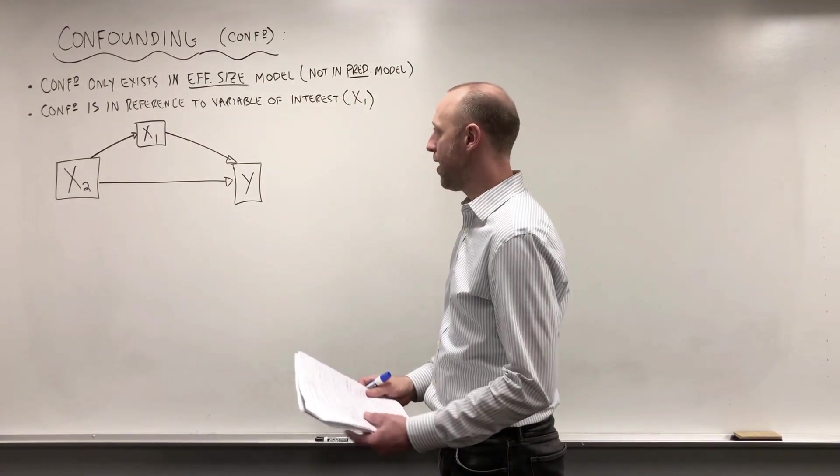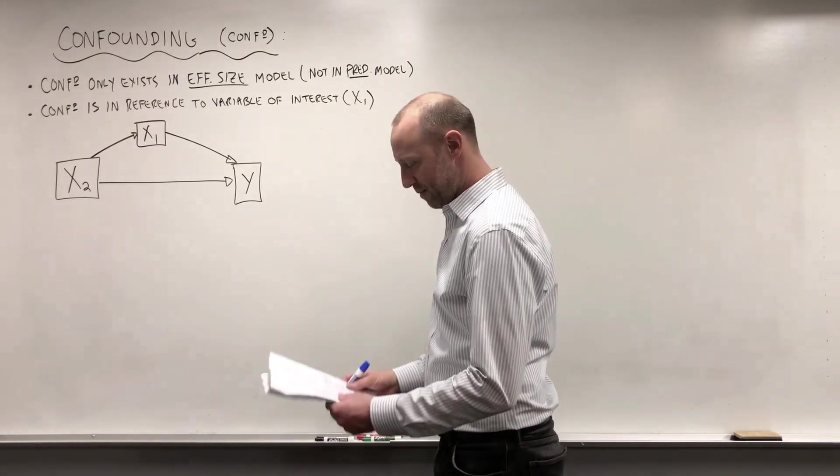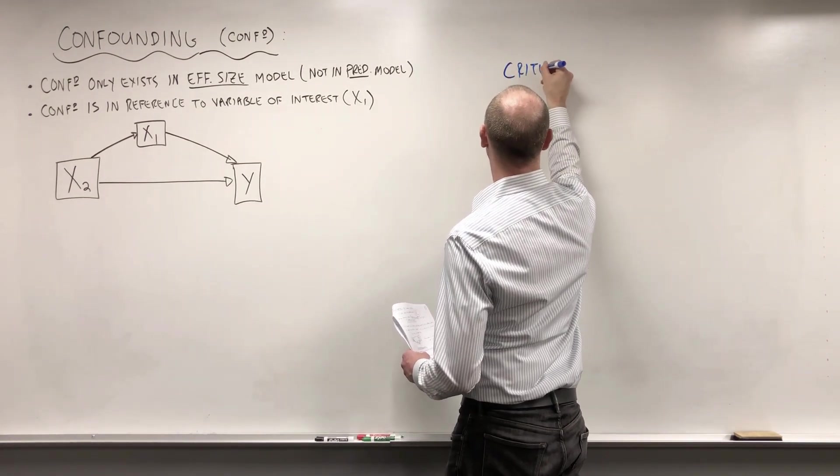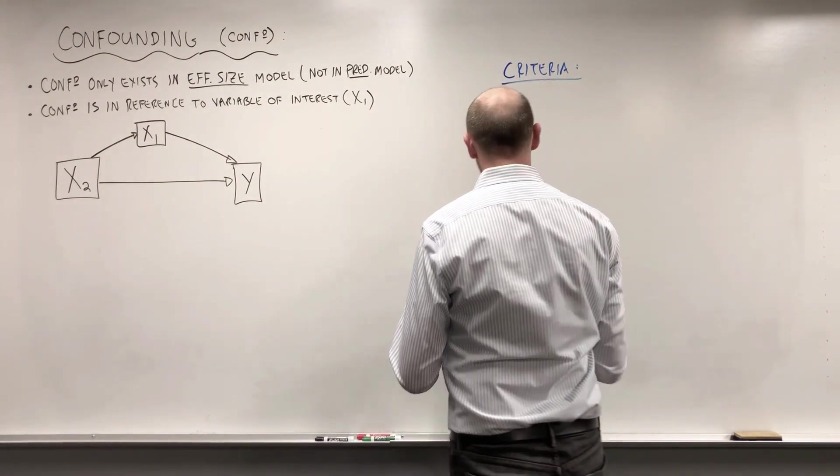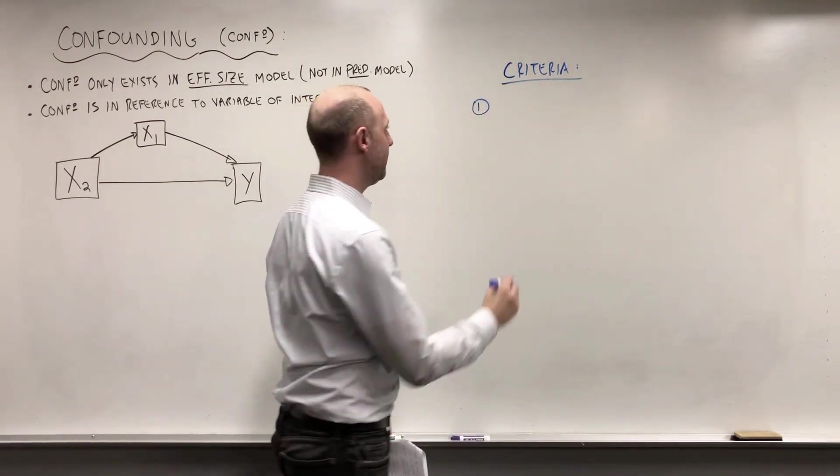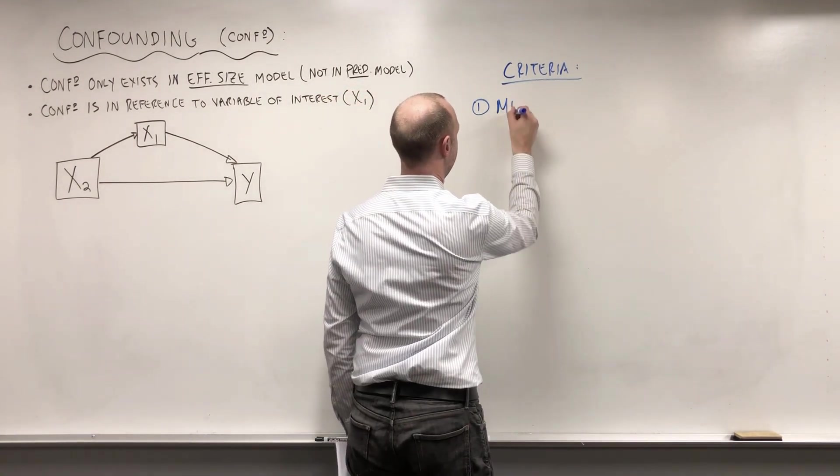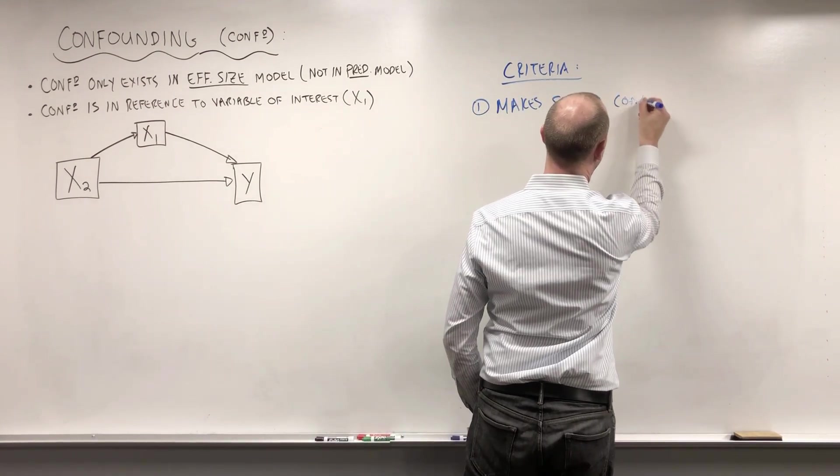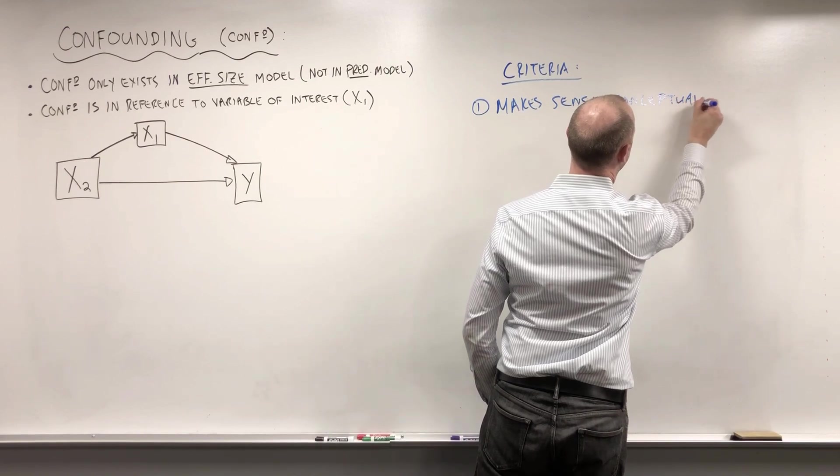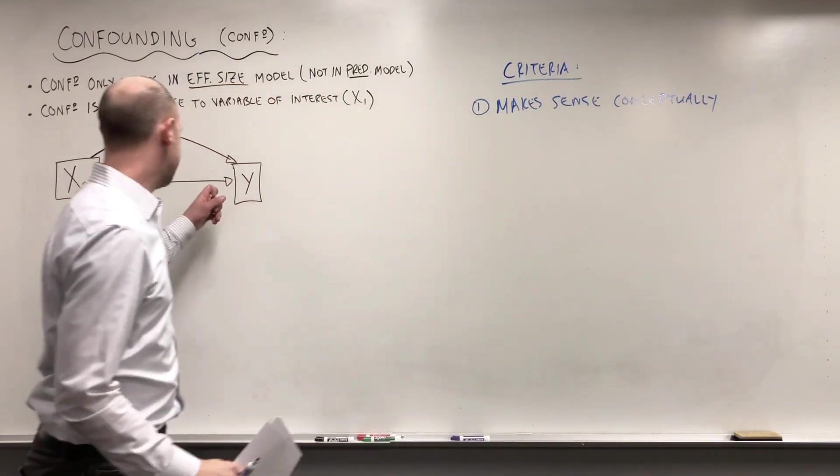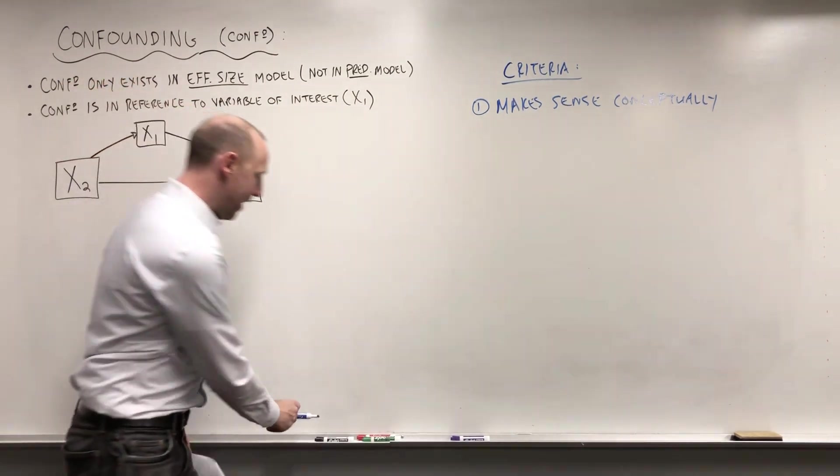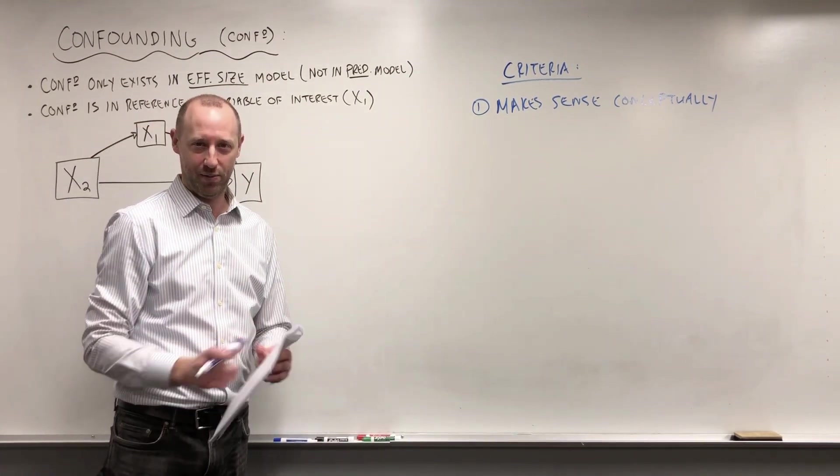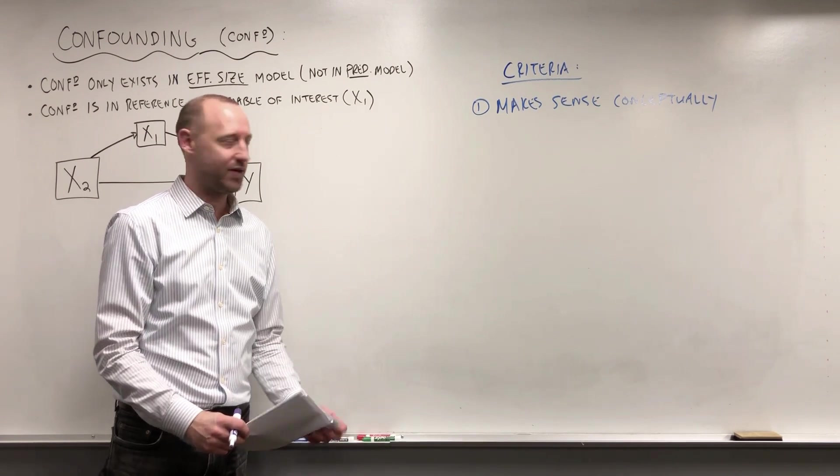This is the classic diagram of what confounding looks like. So, let me write down some of the criteria for confounders. The first and the most important is that it makes sense conceptually. What I mean is that this diagram, thinking of the variable as a confounder, makes sense based on our understanding of the data, not relying just on numerically what is happening.